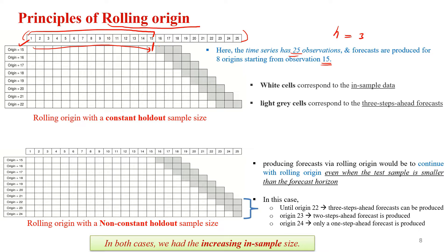From that point onward, we predict the values — that is the forecast horizon of 3. We get prediction values against these three periods and compare them with the actual dataset to calculate forecast errors. From those errors we can compute different accuracy measures such as root mean squared error, mean absolute percentage error, and so on.